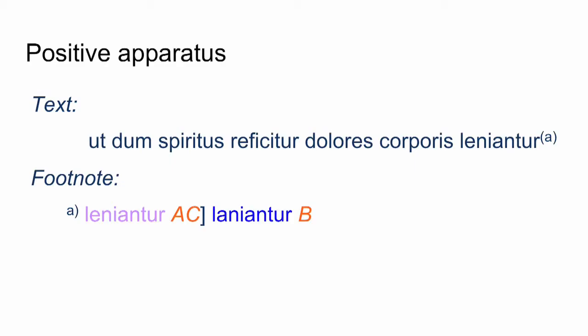But now let's see how we would encode this with a positive apparatus. The text is the same; the footnote is almost the same, except that you see witness indications also for the lemma. So you have 'lanianto' — A, C — the separation — and 'lanyanto' — B. We are making a point to the reader that 'lanianto' is a reading supported by manuscripts A and C, and 'lanyanto' is supported by witness B.